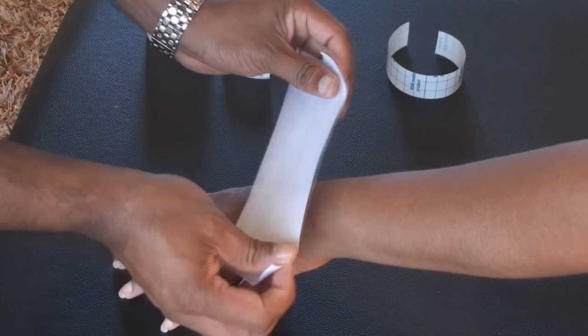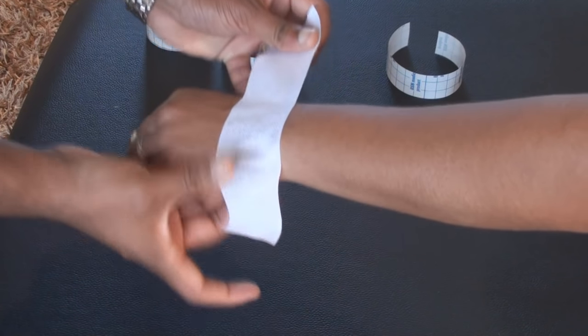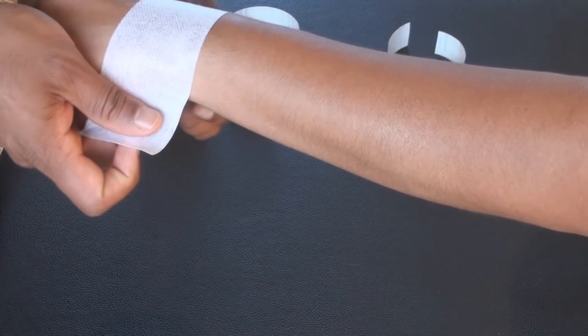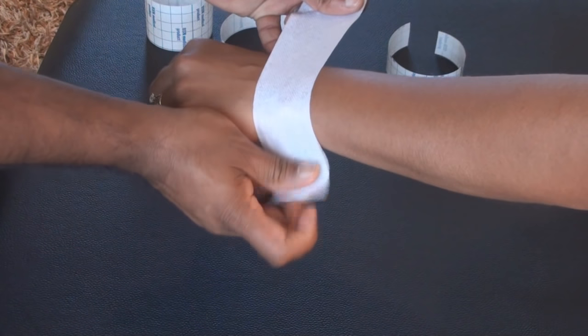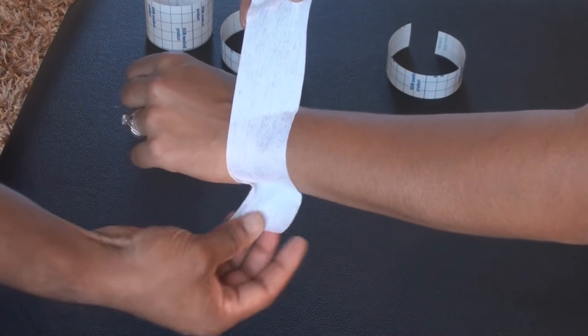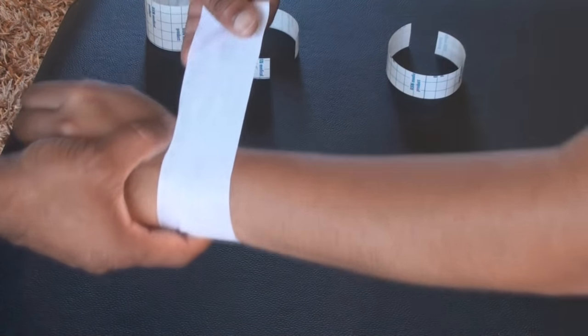I like using the hand model here. I like using the Fixomull first, but sometimes if we're in a rush we don't need to use this, but this goes around the wrist. Let me just get that into the picture. Thank you hand model.